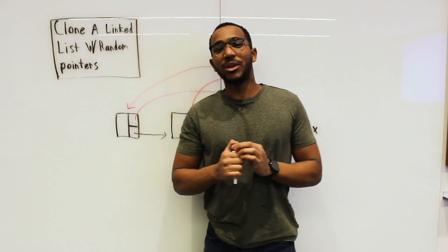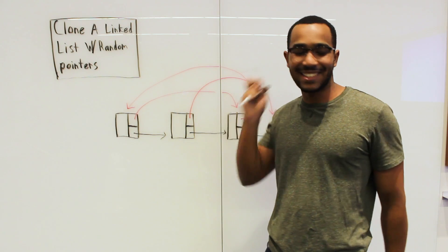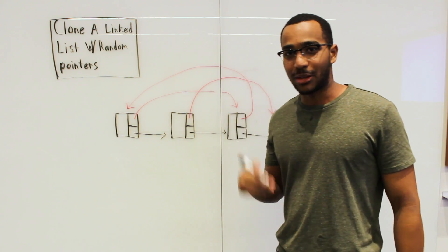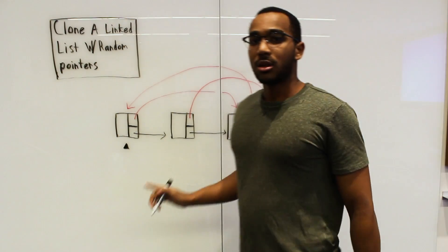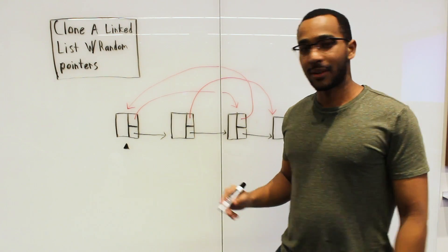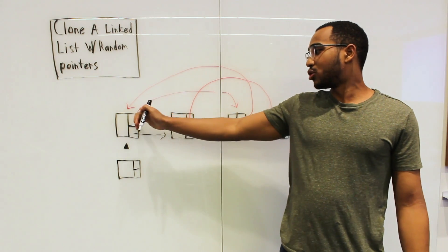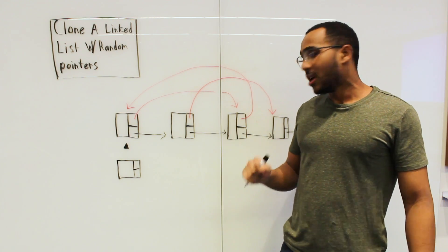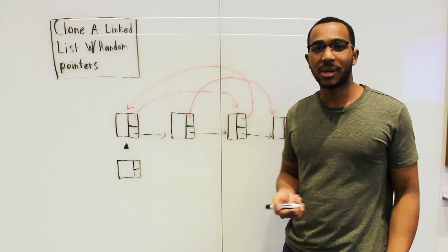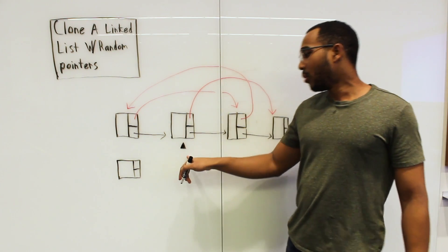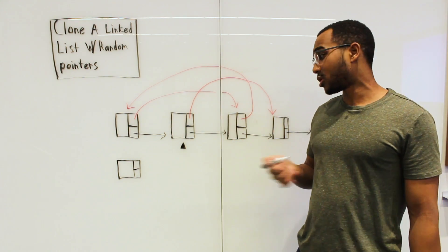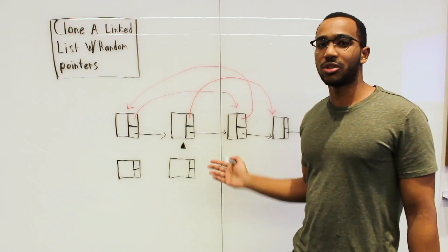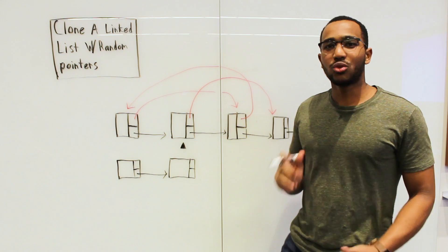Whenever we traverse a linked list — singly or doubly linked — it's all about pointers. It's all about using pointers and advancing them as we do copies. So let's set a pointer on the first item and make a copy of it. We can't really do a copy of the random pointer because we don't even have that node yet in our clone list. So let's advance our next pointer and just continue copying. Now we're looking at this node, we're going to copy it — however we implement this, it would be pretty straightforward — and we connect these two nodes. And now this is where we hit a mental barrier.